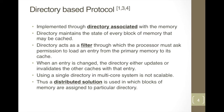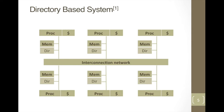A single directory solution is not scalable in a multi-core system as the overhead is very large. Thus a distributed solution with blocks of memory assigned to a particular directory is used. This is the system diagram for directory-based implementation. Notice that each node consists of processors with its private cache and a memory block with its associated directory.